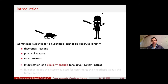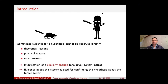Following the standard in the literature, the system we want to ultimately find something out about we call the target system, and the system we actually study we call the source system. We try to get evidence about the source system and use it to confirm the hypothesis about the target system.